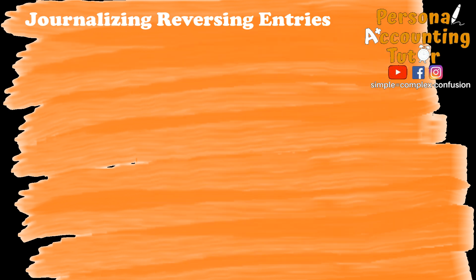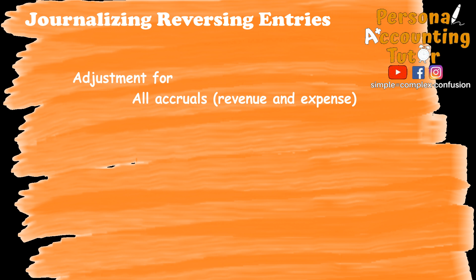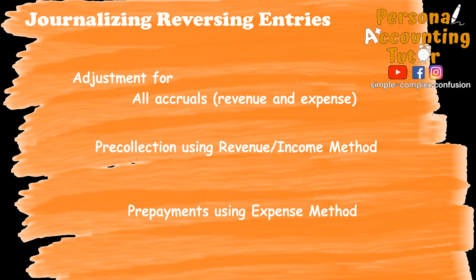A reversing entry is a journal entry made at the beginning of the next accounting period that reverses some adjustments. This becomes optional depending on the accounting practice followed. If we opt to use reversing entries, the following adjustments will be reversed at the start — meaning prior to recording regular transactions of the next accounting period, we will switch the position of accounts in our adjusting entries. We will reverse: adjustments for all accruals, whether revenue or expense; pre-collection using the revenue or income method; and prepayments using the expense method. We are reversing the adjusting entry — not the initial entry. It is just the adjusting entry.